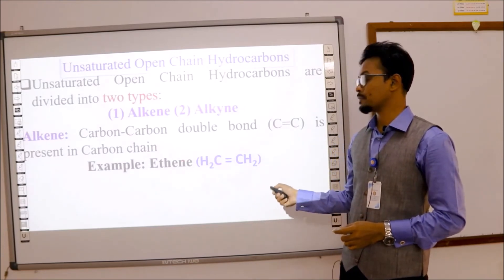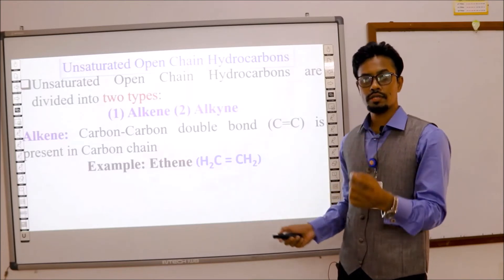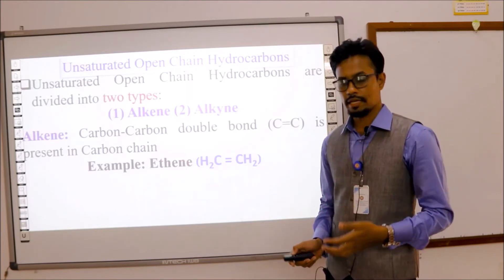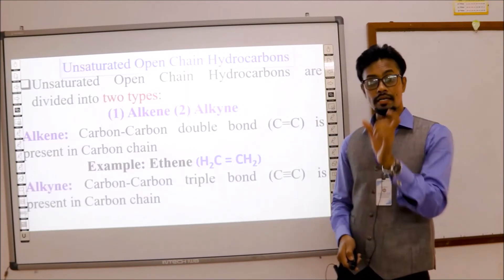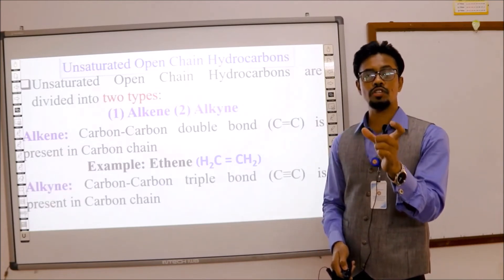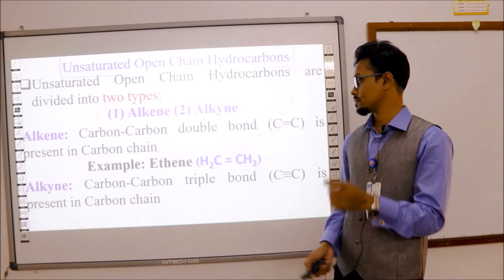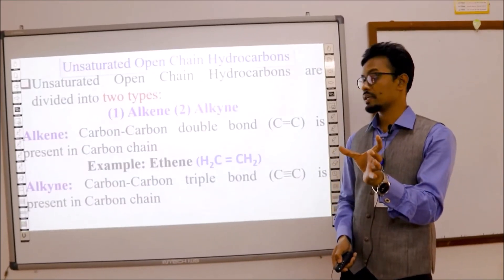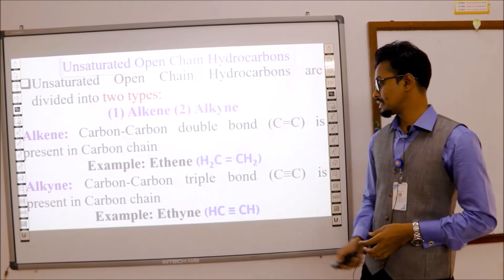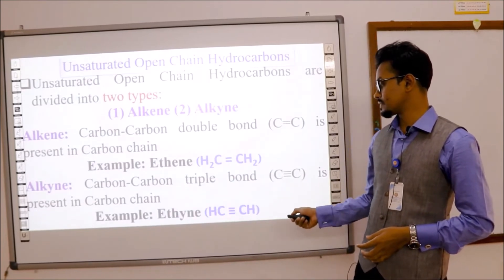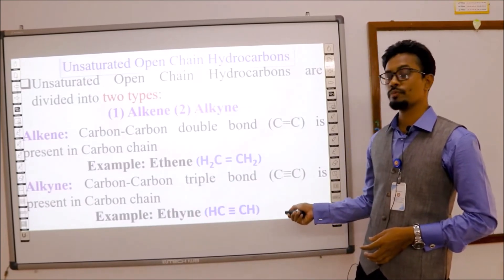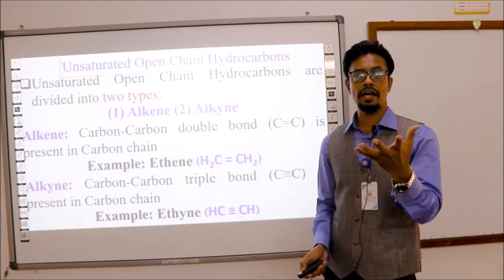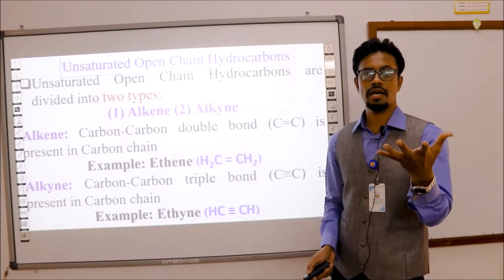When the number of carbons is two it is ethene, three is propene, four is butene, five is pentene, and so on. For alkyne, a carbon-carbon triple bond is present in the carbon chain — that is called alkyne. So ethyne has a carbon-carbon triple bond with two carbons; three carbons is propyne, then butyne, and so on.